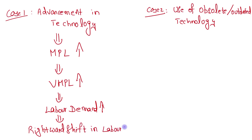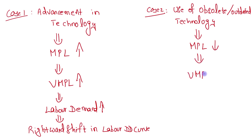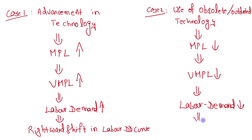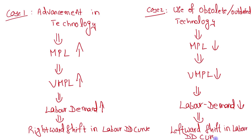Case 2 is the use of obsolete or outdated technology. When we are using outdated technology, it decreases the efficiency of workers, so the marginal product of labor decreases, leading to a decrease in VMPL — the value of marginal product of labor. As a result, labor demand will be reduced, and finally there will be a leftward shift in the labor demand curve.